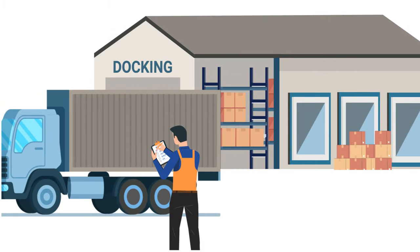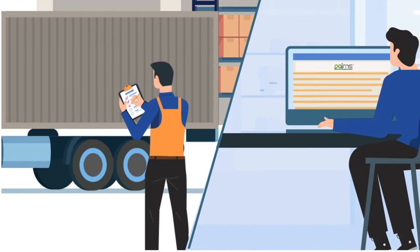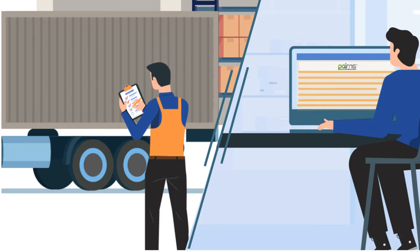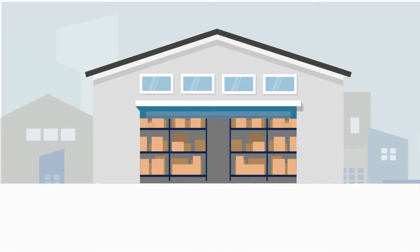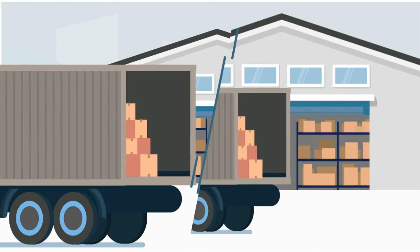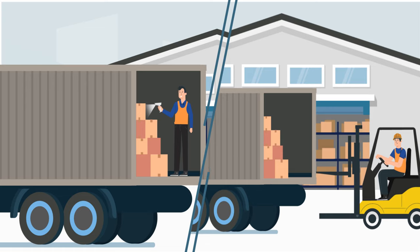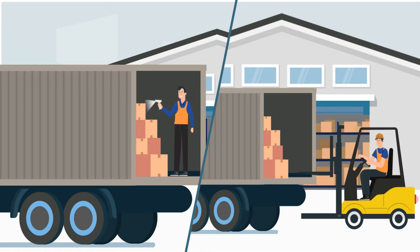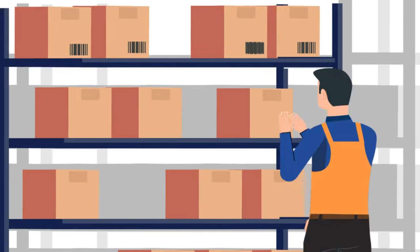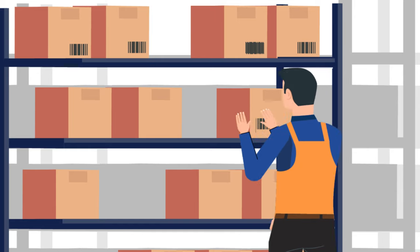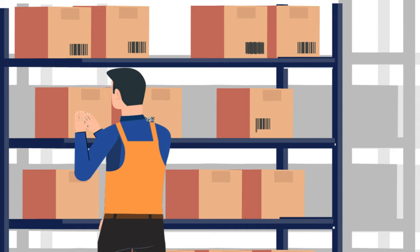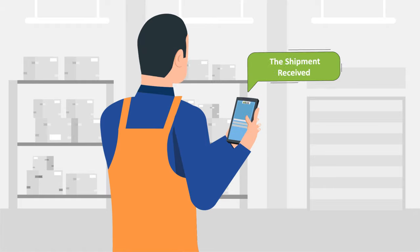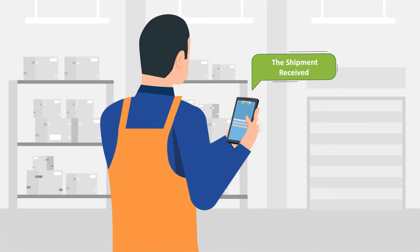The driver then reports to the dock along with the vehicle, and the supervisor scans the vehicle to record the dock-in time. The unloading team then proceeds to unload the vehicle and has an option to scan and unload the material if required. Barcode labels — either linear barcodes or QR codes — are printed at this stage if required and applied to the material. Post unloading, an automatic receiving instruction is created and assigned to the receiving team.